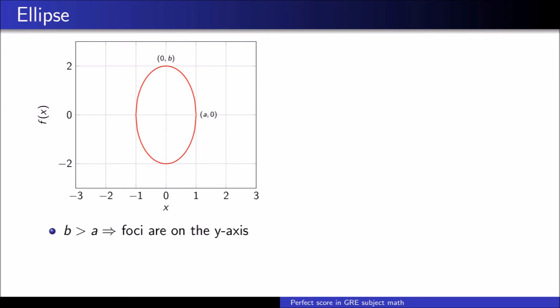If b is bigger than a, this is the shape of the ellipse and the foci are on the y-axis. a equal b is like a circle. You don't need to remember the orientation of the ellipse in each case. Just remember to plug in (a,0), (0,b) when drawing the ellipse to yourself when solving a problem.